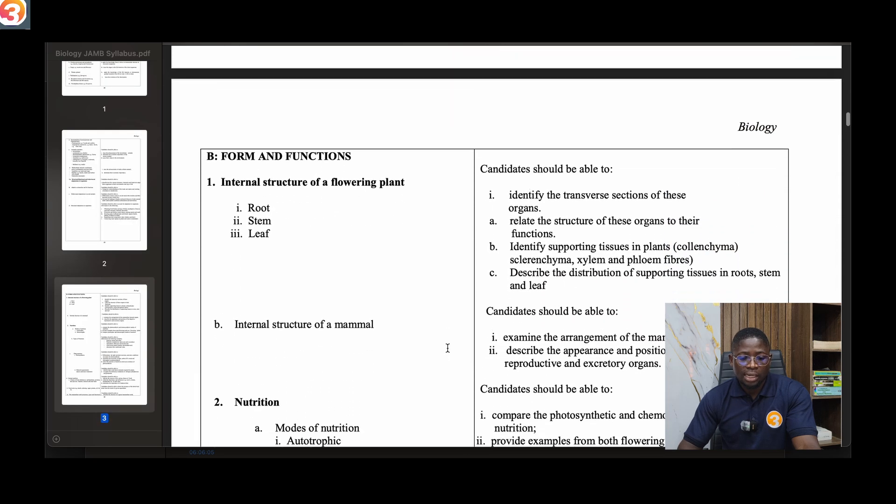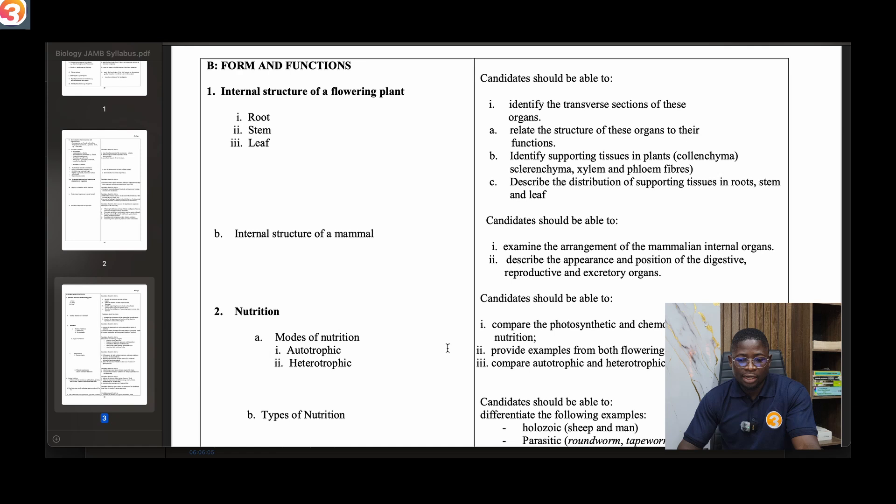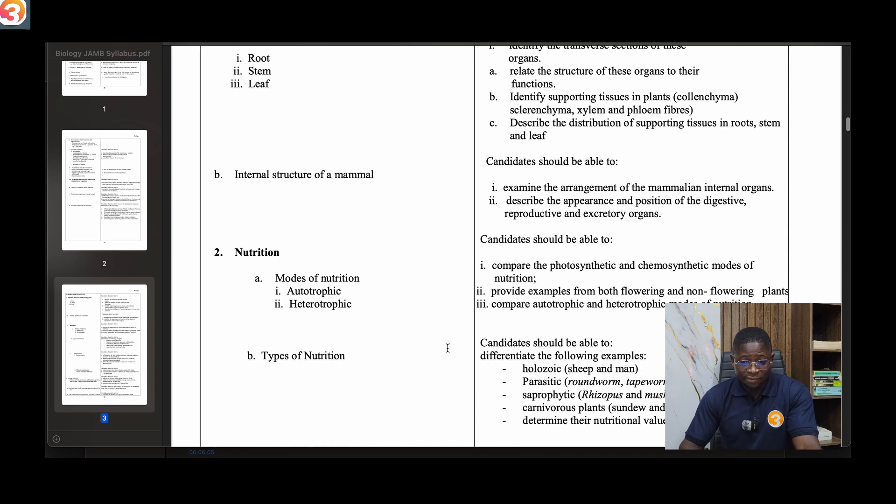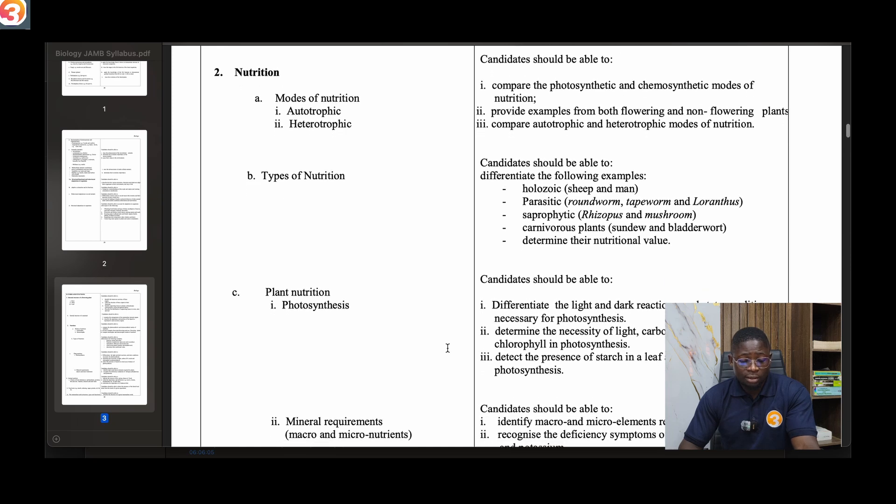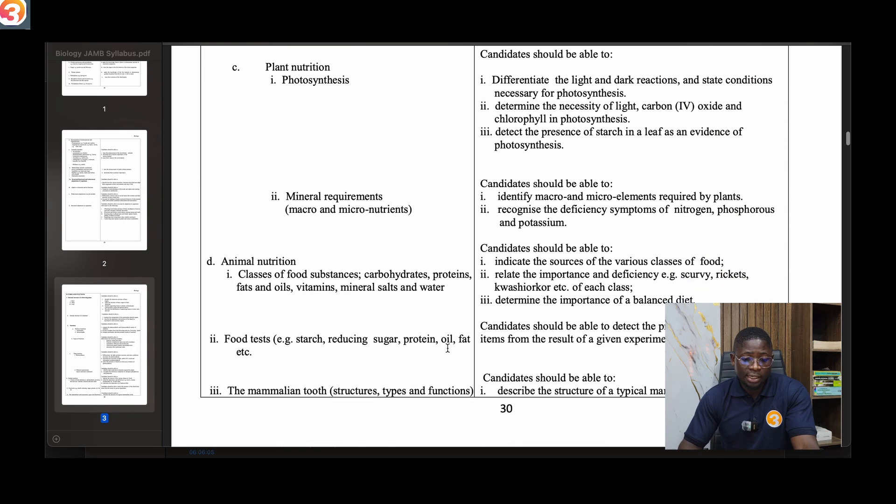Then going to the B part about forms and functions - internal structure of a flowering plant and the internal structure of a mammal. The second topic on this second part is nutrition - modes of nutrition, autotrophic, heterotrophic types of nutrition. Talk about plant nutrition and animal nutrition.